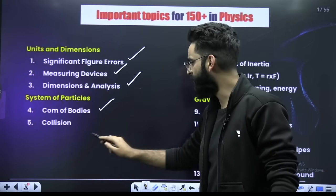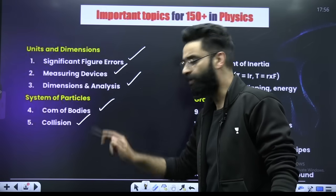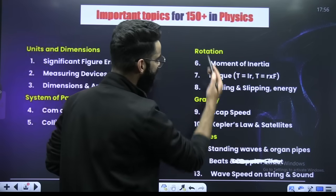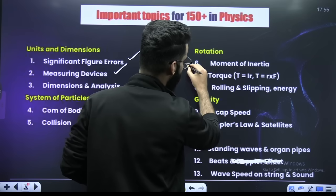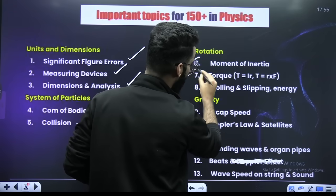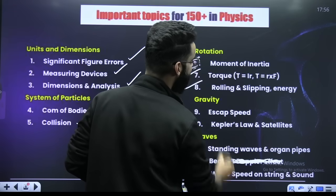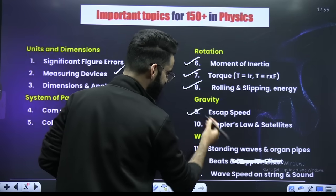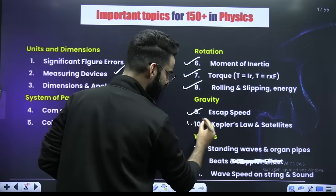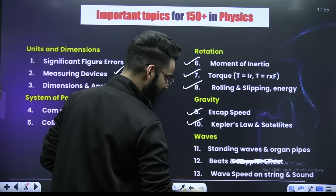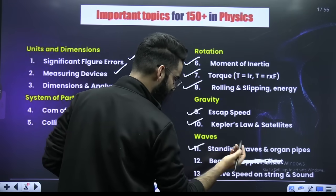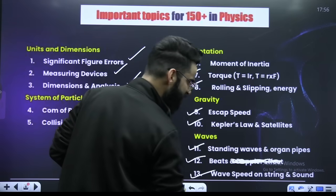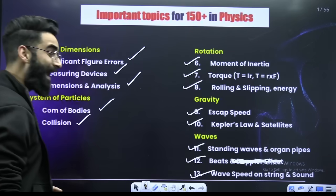You have centre of mass of bodies, collision. From the rotation part, it's moment of inertia, torque, rolling and slipping. From gravitation, it's escape velocity and Kepler's laws. From waves, it's standing waves, organ pipes, wave speed on string and sound.